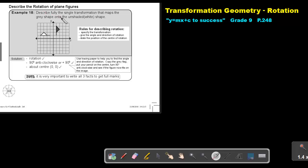Describe fully the single transformation that maps the gray shape onto the unshaded white shape. So, this shape onto this one.